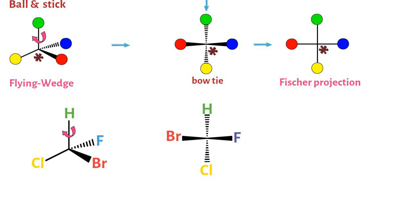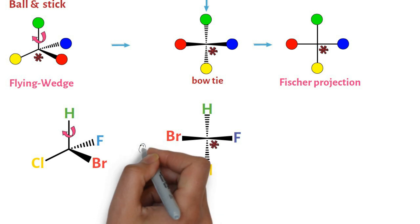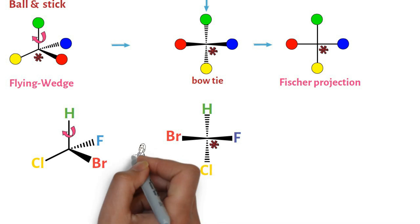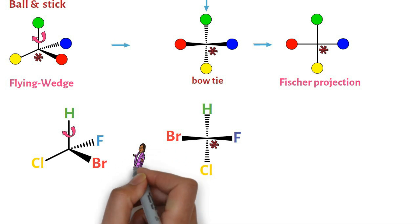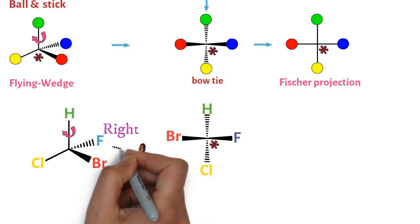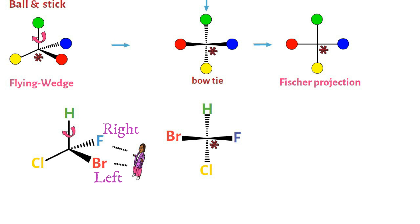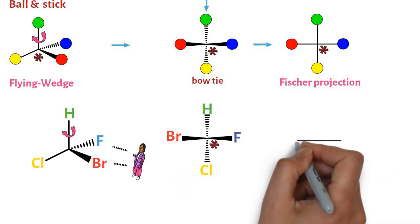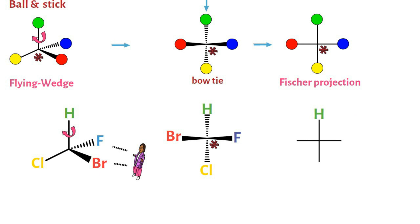This gives us a bowtie representation. Another way to write the bowtie representation is to imagine yourself standing in between the wedge and dash. You see fluorine on the right and bromine on the left, both coming towards you — put these on the right and left wedges of the bowtie. You see hydrogen pointing up and chlorine pointing down, both away from you — put these on the up and down dashes of the bowtie. This bowtie is easily converted to Fischer projection by replacing wedges and dashes with a cross.